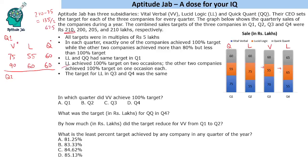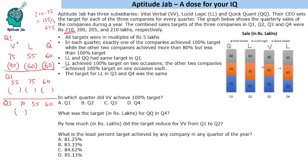Now we need to figure out the target for each company in each quarter. In Q2, the sales figures are: VV = 55, LL = 75, QQ = 60. In Q3, the sales are: VV = 70, LL = 55, QQ = 60. In Q4, the sales are: VV = 55, LL = 65, QQ = 65. We will now determine the targets for each.